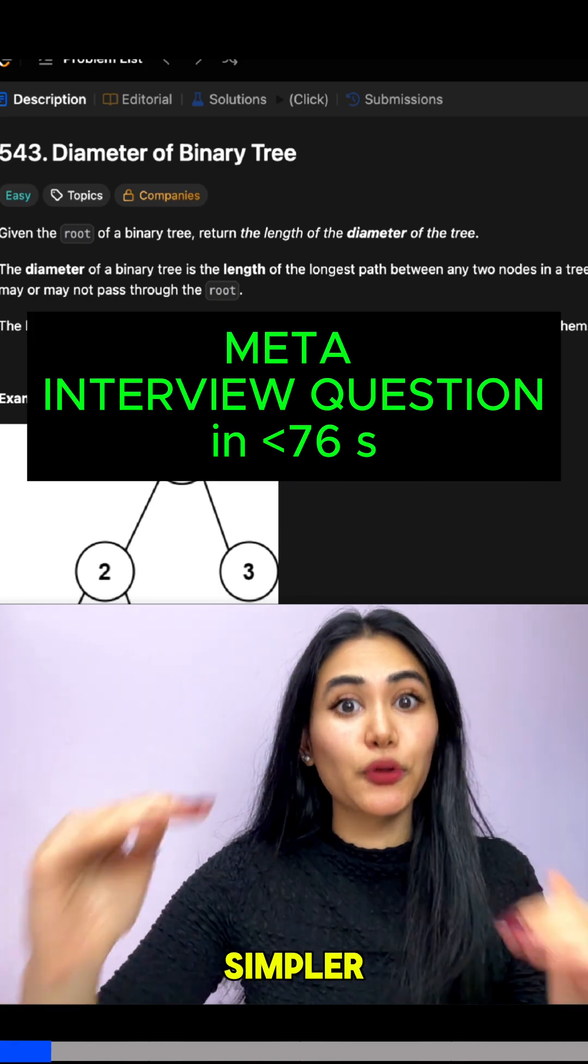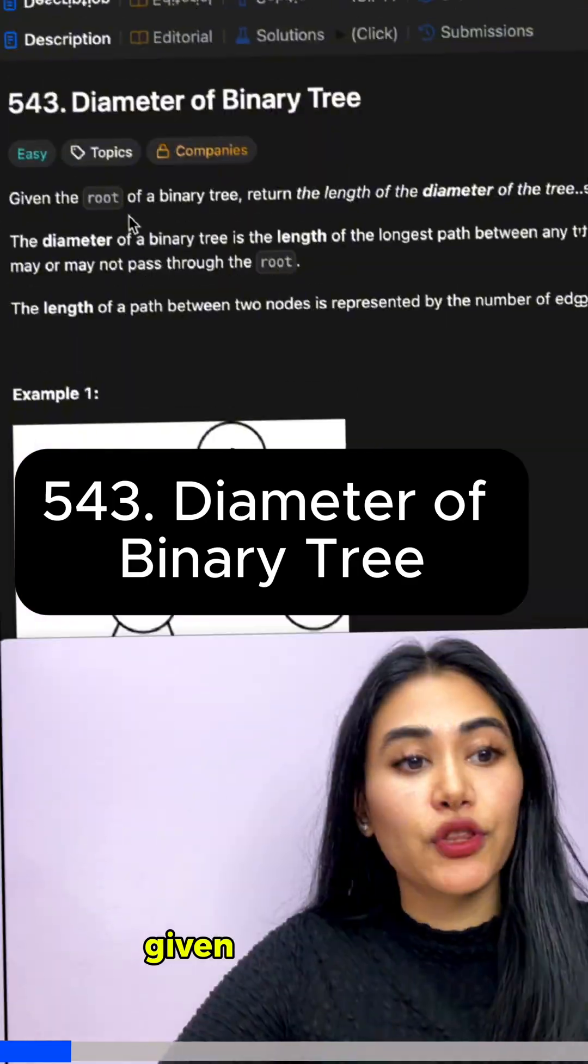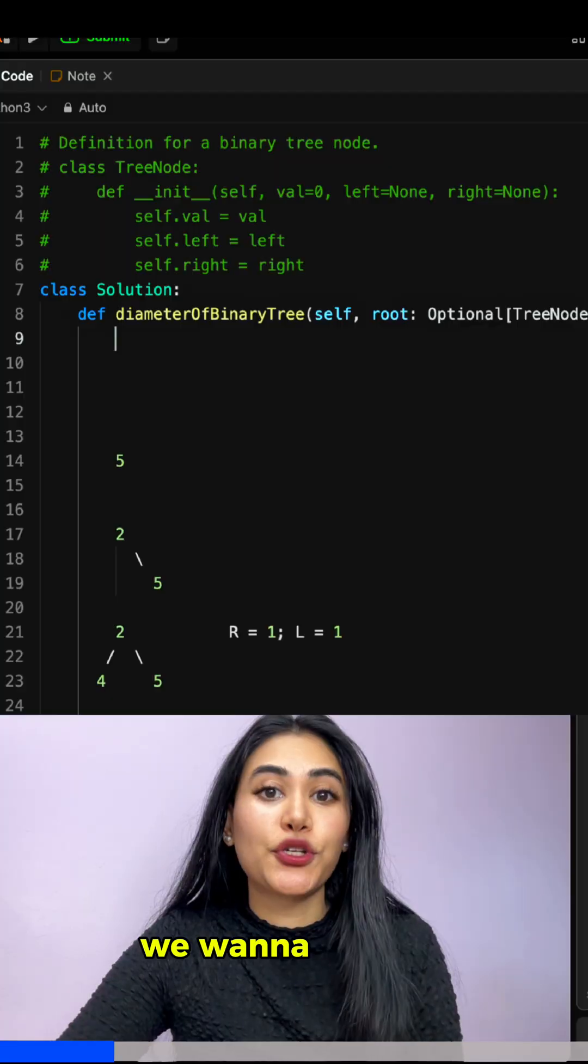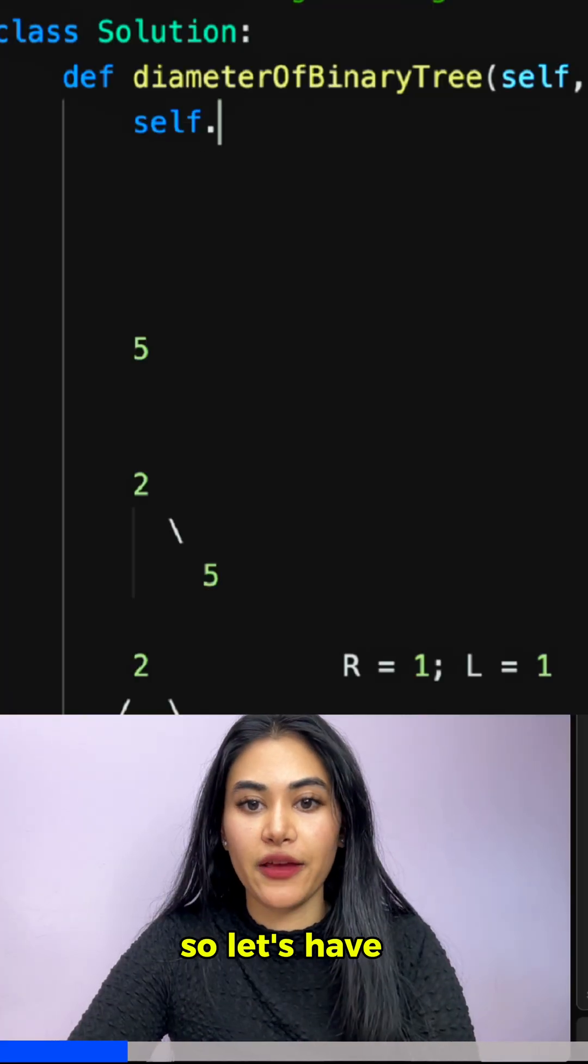For any problem, remember the simpler it is the easier it is. Given the root of a binary tree, return the length of the diameter of the tree. You want to return a final diameter, so let's have a variable.